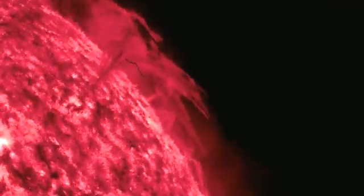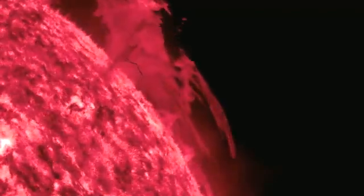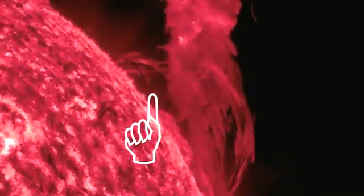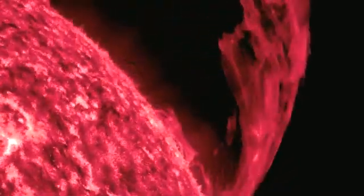Corona rain is a cool-looking phenomenon. It has something to do with how material is being put into the prominence—that's the technical word for this thing. So now it's falling back down to the surface of the sun.